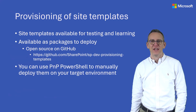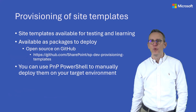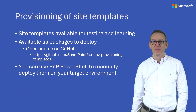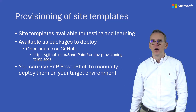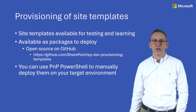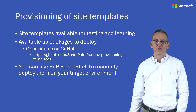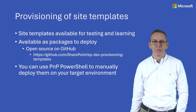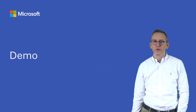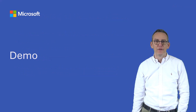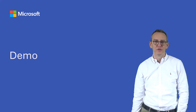Hi, I'm Paolo Pialorsi and in this video we are going to see how we can do manual provisioning of site templates in SharePoint Online using PNP PowerShell. There are plenty of site templates available for testing and learning purposes that you can find on a GitHub repository as open source packages. You can easily download them from GitHub and using PNP PowerShell you can do the actual provisioning on your target environment. In this demo we are going to see how to set up an environment and how to do the manual deployment of those templates.